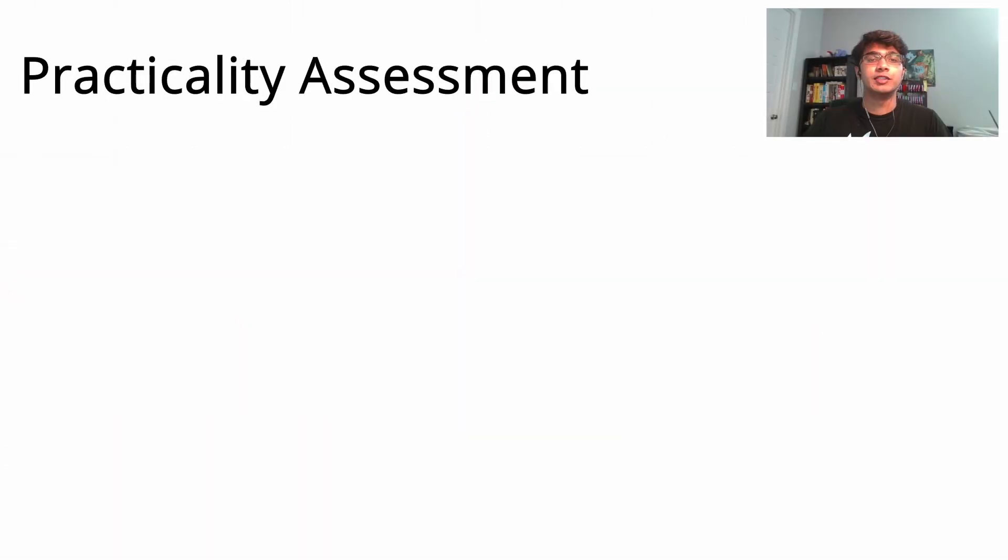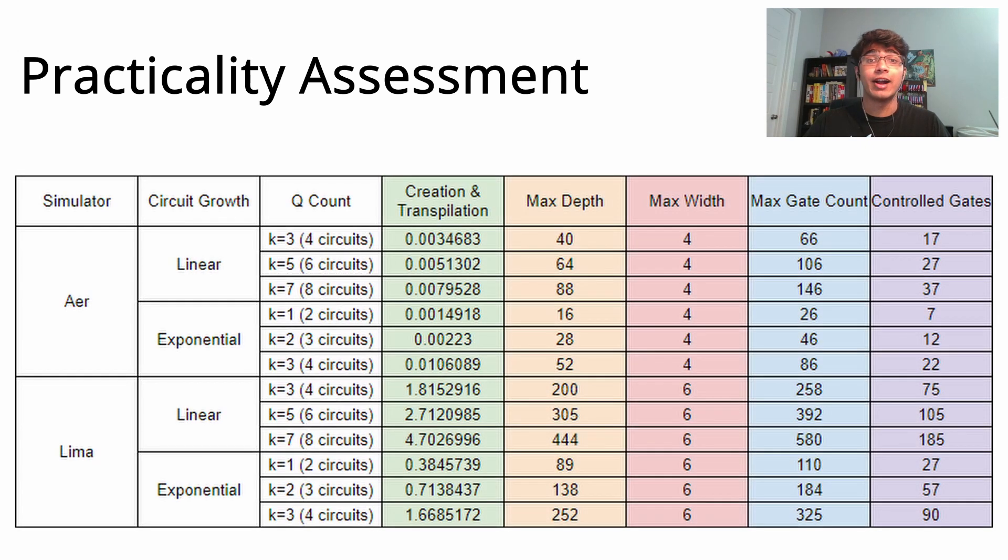Since current quantum computers deal with a variety of issues, the more gates and qubits used, the more error-prone it is. To see how practical our algorithm is, we found the circuit's width, depth, time to compile, and total number of gates needed. Width is the number of qubits used, and depth is the number of gates used.